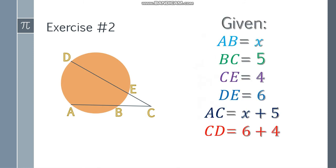To find AC, add AB plus BC. AB is x and BC is 5, so that's x plus 5 - that's the whole secant. For the other secant, DE is 6 and CE is 4, so 6 plus 4 equals 10.